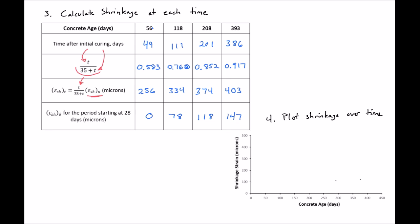What we're going to do then is we're going to plot our shrinkage versus our time down in the plot below. We'll start with 0, 0 - at 0 time we're not going to have any shrinkage. At 56 days we're going to have 256, so we'll be right about there.